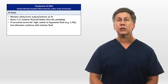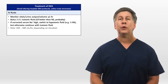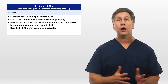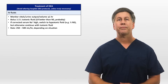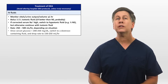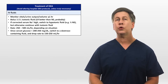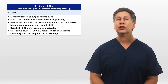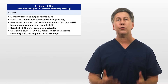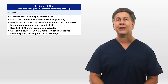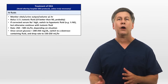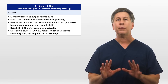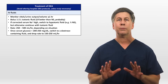After the initial bolus, typical fluid rates are in the 250–500 mL per hour range, depending on the situation. Once the serum glucose is down below 200–250 mg/dL, switch to a dextrose-containing fluid like D5 half normal, and further drop the rate down to the neighborhood of 150–250 mL/hr, as long as objective measures of volume status are also improving.